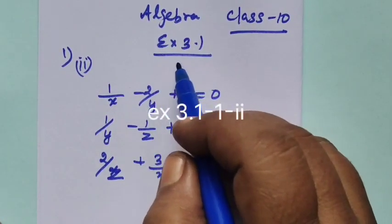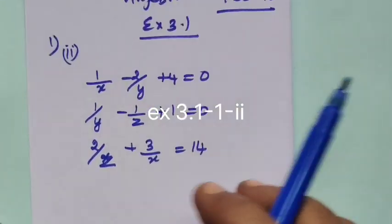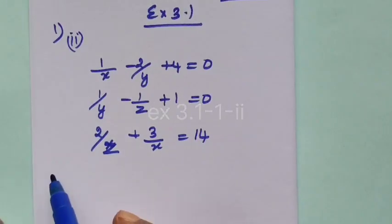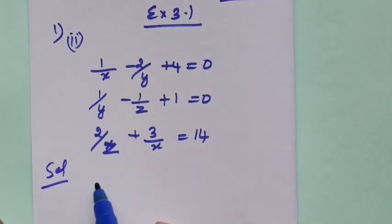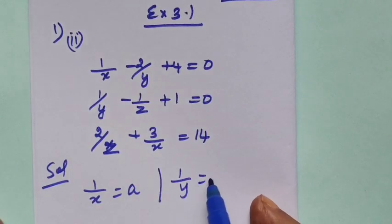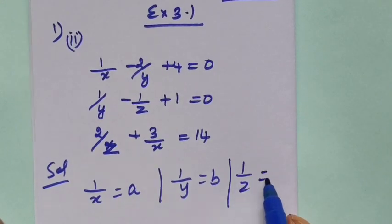This is for class 10, Algebra Exercise 3.1, question number 1. The equation is 1 by x minus 2 by y plus 4 equal to 0, then the next one. We have a solution using substitution: let 1 by x is a, 1 by y is b, let 1 by z equal to c.